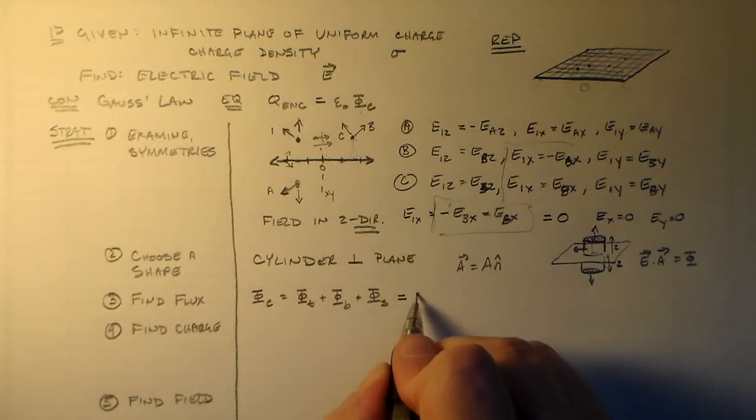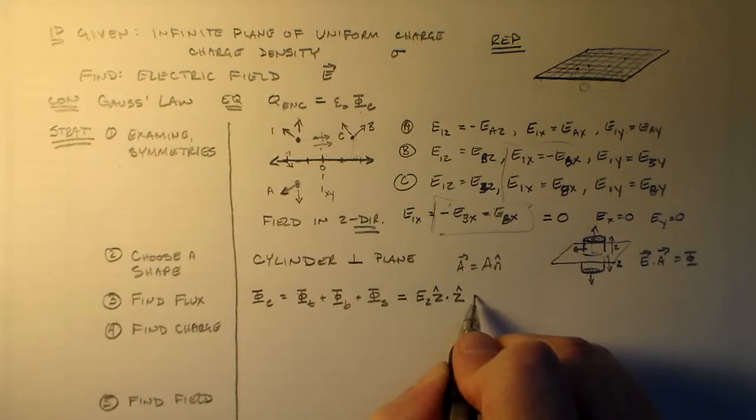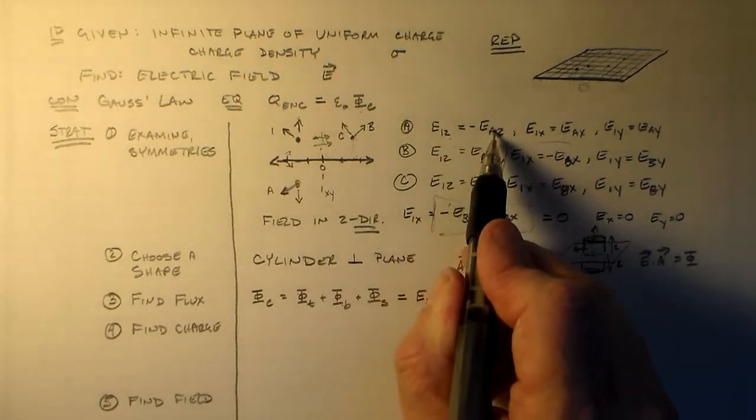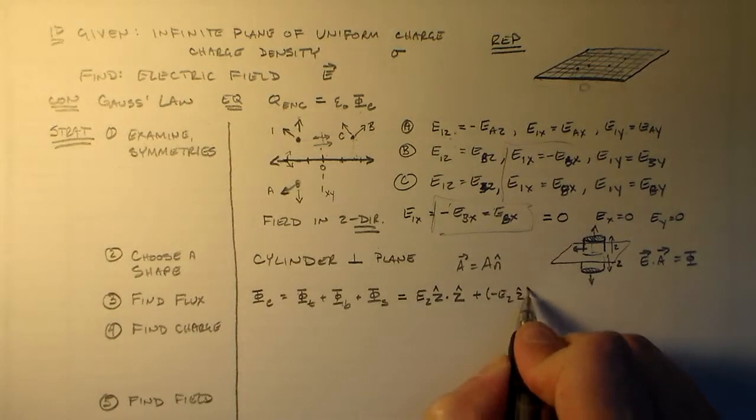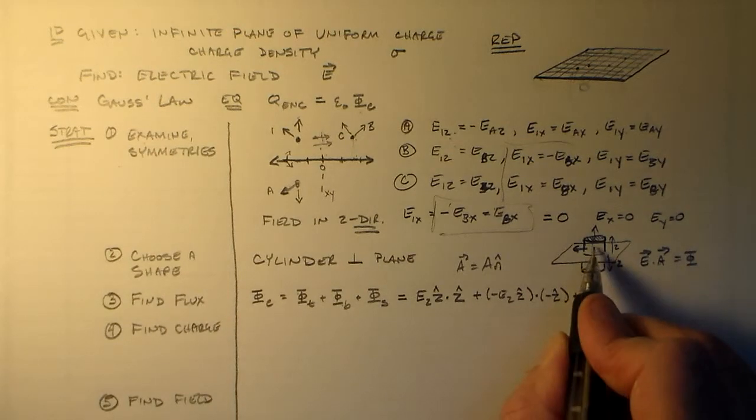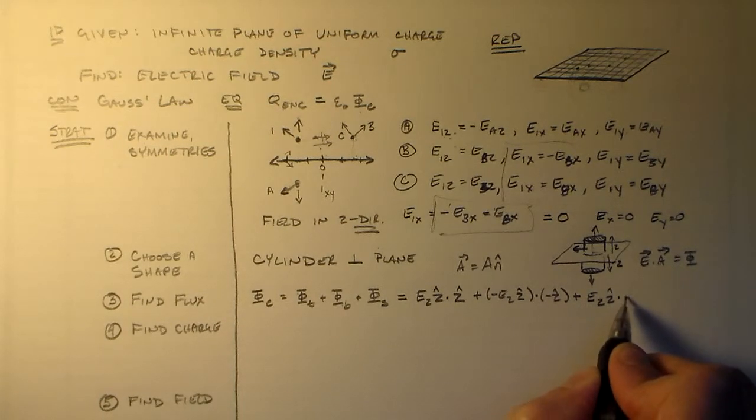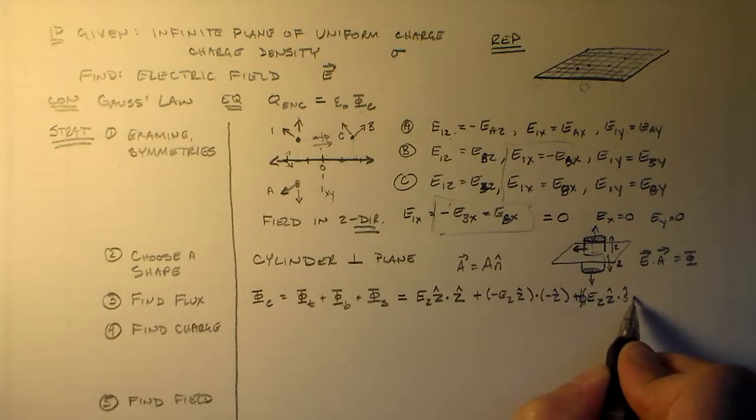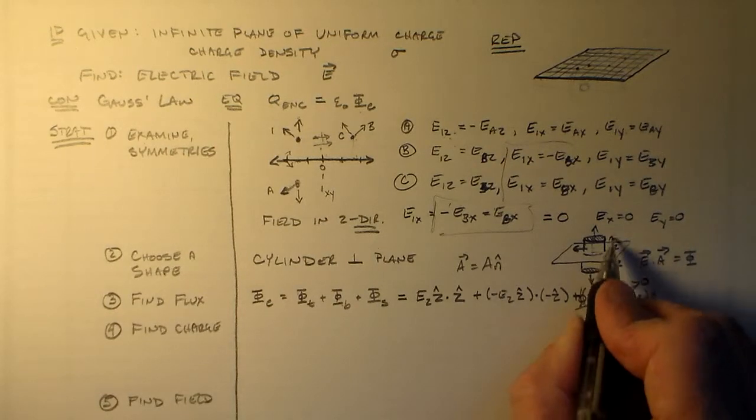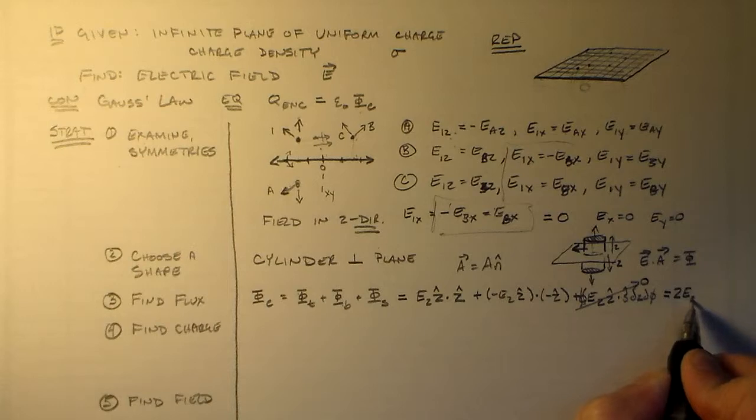So phi T is going to be Ez in the z hat direction dot the normal, which is z hat. And then we have phi B is minus Ez coming down here. Minus Ez in the z hat direction dot minus z hat plus whatever's going on here. This is actually the s hat direction. So we have Ez in the z hat direction dot s hat. Actually, this has to be integrated over z and phi. But this is zero because it's going this way and this is coming out. So that guy's zero.